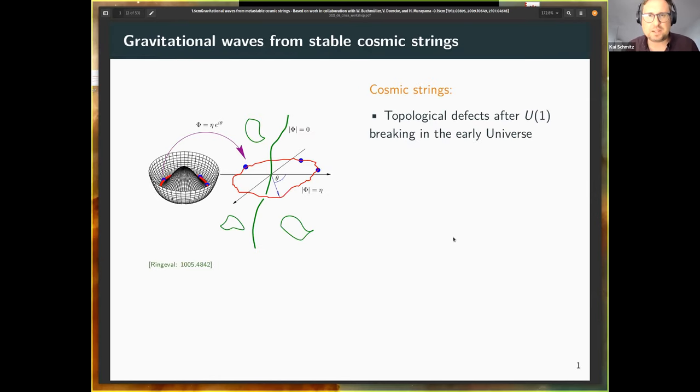However, before we turn to the actual topic of the talk, metastable cosmic strings, let me take a step back and review the sort of standard, ordinary case of stable cosmic strings and the associated gravitational wave spectrum. To put us all on the same page, cosmic strings are a certain type of topological defect, a cosmic defect that can form in the early universe. In the case of cosmic strings, the underlying production mechanism is the spontaneous breaking of a U1 symmetry in the early universe, for instance, in such a Mexican head type scalar potential.